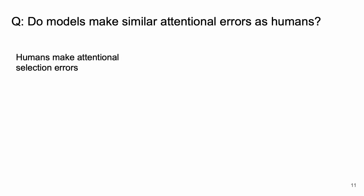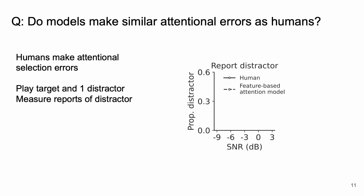Now human attention is not perfect and so we can ask if our models make similar attentional errors as humans. To do this we're going to reevaluate the trials where we played one distractor along with our target and measure the number of times the distractor word was reported instead.